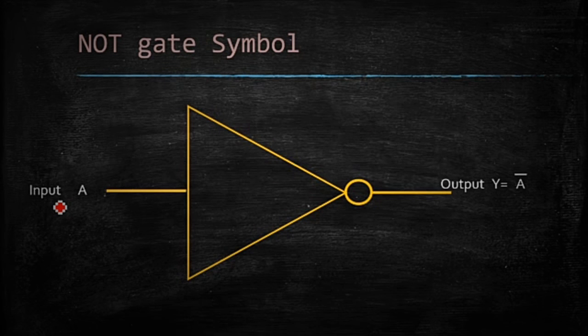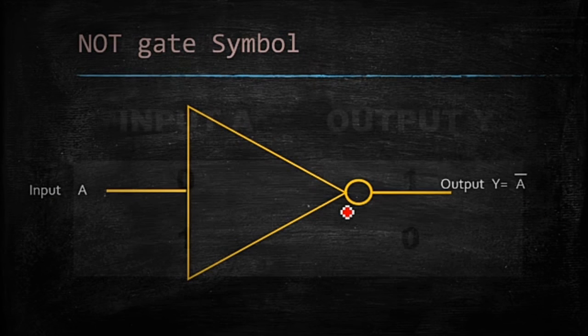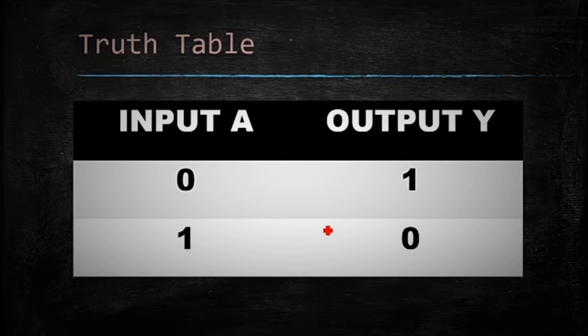Symbol of NOT gate. There is only one input. It means 2 raised to power N, input is 1, equals 2. There are two combinations.